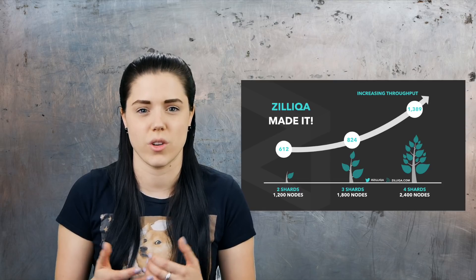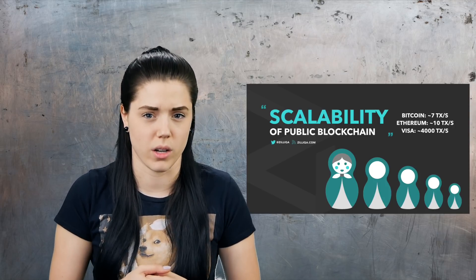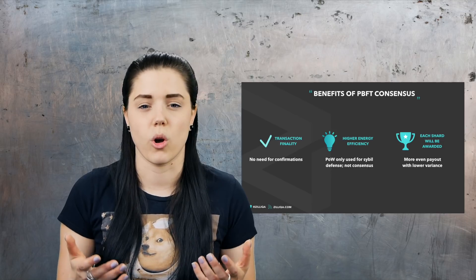Zilliqa's circulating supply sits at 7.2 billion and the tokens are referred to as Zillings, or Zills for short. The usage of Zills gives token holders the ability to pay for sending transactions and running smart contracts, similar to how Ethereum uses Ether as gas. It is estimated that it will have a block time of two minutes and process thousands of transactions per second. In the recent public testnet, they reached a peak throughput of 2,000 transactions per second with 1,000 nodes. Zilliqa uses an optimized practical Byzantine fault tolerance — PBFT for short — as the protocol for consensus.